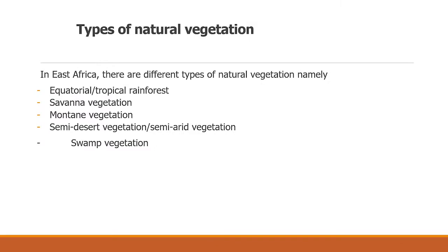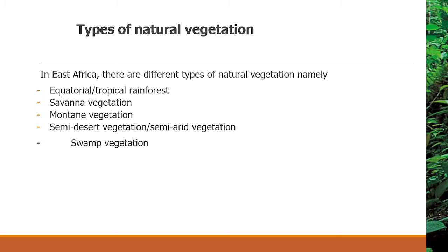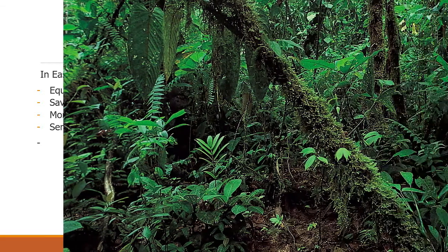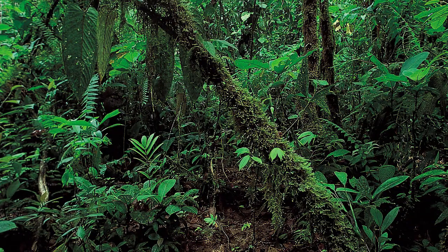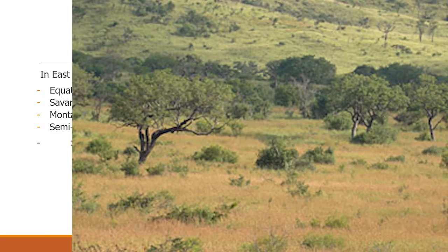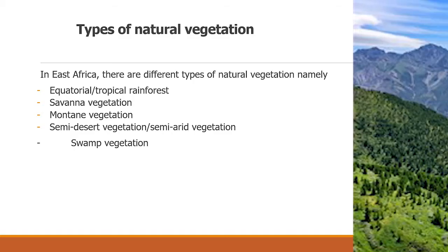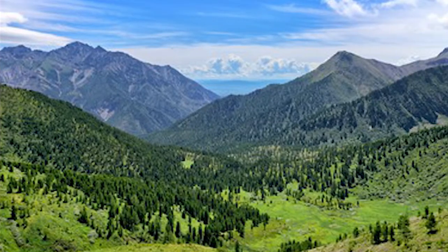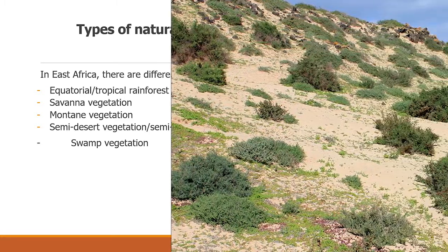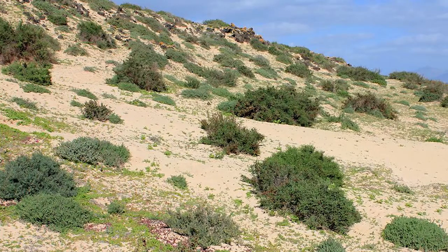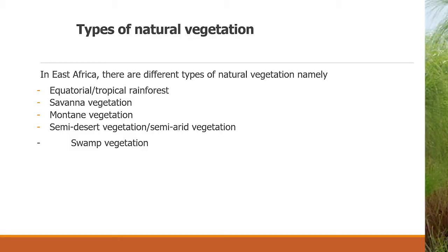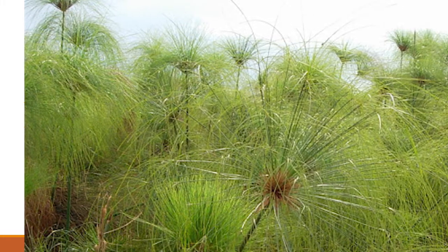Types of Natural Vegetation in East Africa. There are different types of natural vegetation, namely: Equatorial or Tropical Rainforests, Savanna Vegetation, Mountain Vegetation, Semi-Desert or Semi-Arid Vegetation, and Swamp Vegetation.